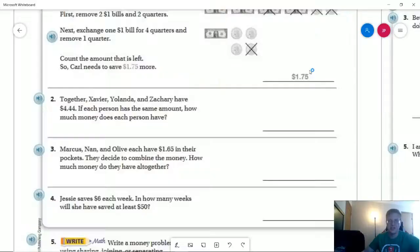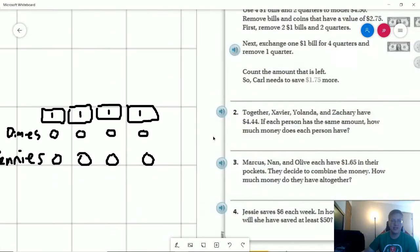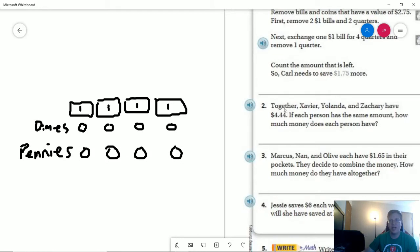I've tried to draw a few pictures and so forth along the way to help us. So number two, they wanted us to use this strategy with drawing out the money. We probably could get away with not doing that for number two or number four, but I did it for number two anyway. So together we have three people that have $4.44. So we are going to figure out how much each person gets.